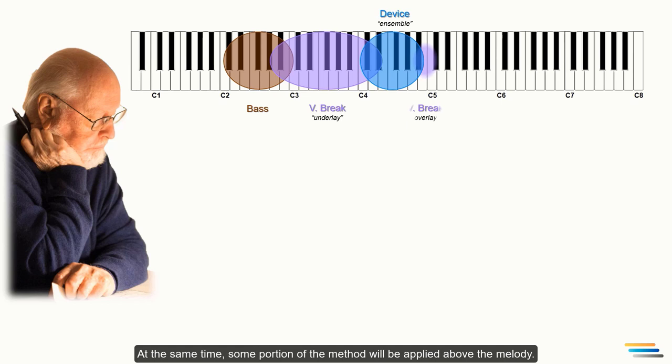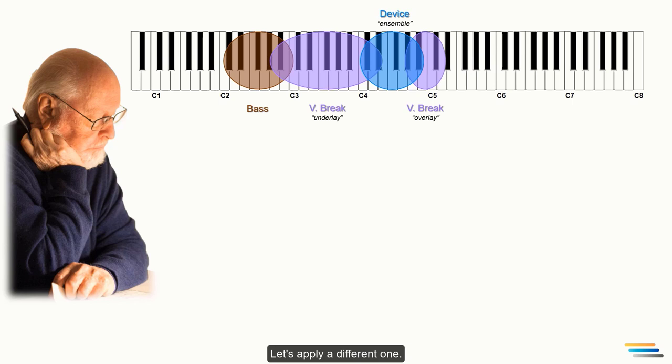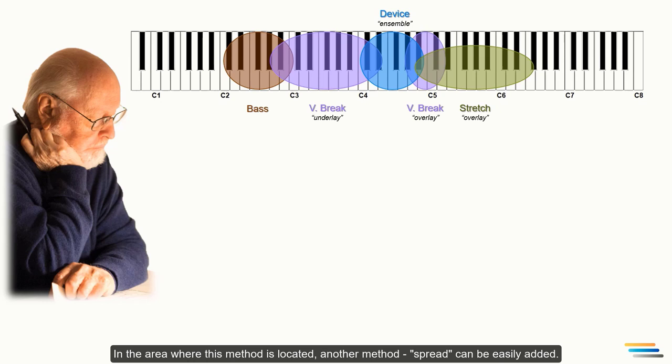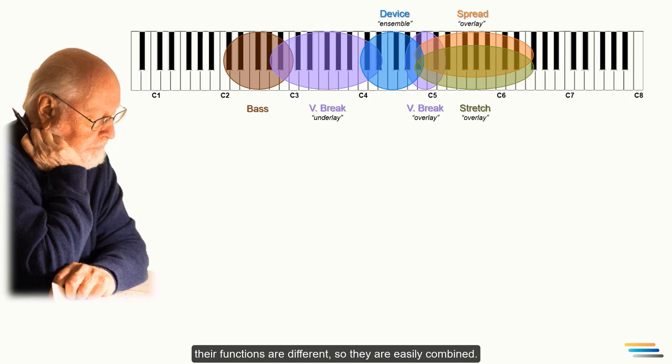Yes, it might seem a little dark to you right now, but don't worry, I will explain what are these masses. There is still a wide space above the melody. Let's apply a different one. One of the interesting methods is the stretch method. In the area where this method is located, another method, spread, can be easily added. It is true that although both may appear to be mixed, their functions are different. So, they are easily combined. So, we have made a rough plan and now let's move on to its implementation.